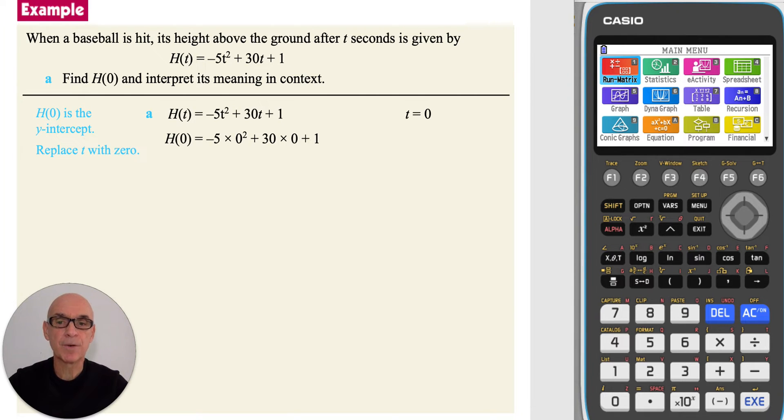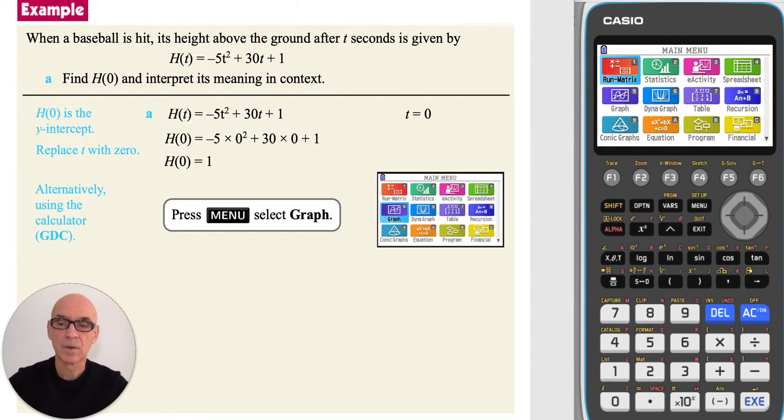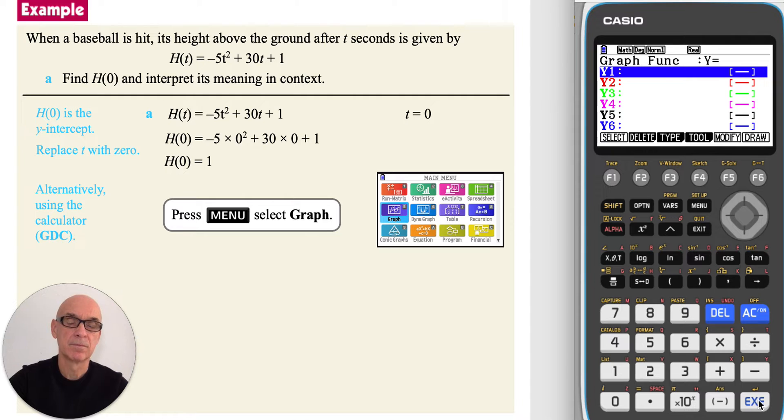Replacing t with 0 gives h of 0 is equal to 1. Alternatively, performing this calculation on the calculator, from the main menu, select graph and type the equation of the model into y1.